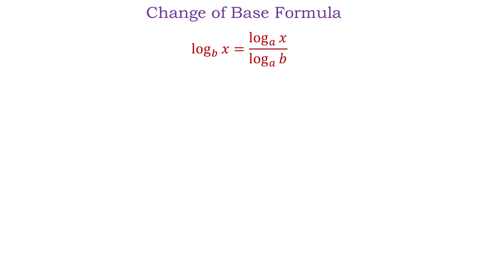In this video we will talk about the change of base formula. This is log base b of x equals log base a of x over log base a of b. In this formula the base of the original logarithm is b. Then we can rewrite this logarithm as a quotient of two logarithms where the new base is a number a. The base a can be any number we need as long as it is positive and not equal to 1.